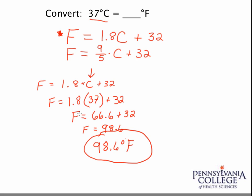In summary, we need a formula. The formula here: Fahrenheit equals 1.8 times Celsius plus 32. We write that down. Regardless of what we're given, if we're given Celsius, we'll plug that in for C and solve for F. If we're given the Fahrenheit, we would plug that in for F and solve for C.